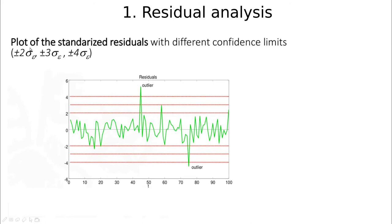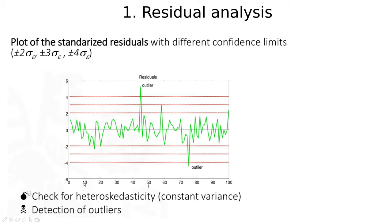Let's start with residual analysis. Imagine you have some fitting and this residual. There are a couple of things to check. The first one is heteroscedasticity. In this case, everything is okay because you can see constant variance — the variability is almost the same for all times. The second thing you can do is outlier detection. You can plot two standard deviations, three standard deviations, and four standard deviations.